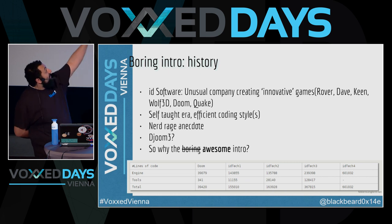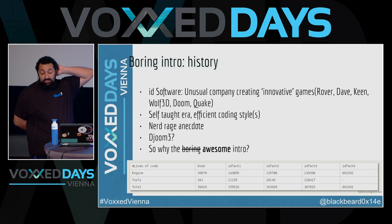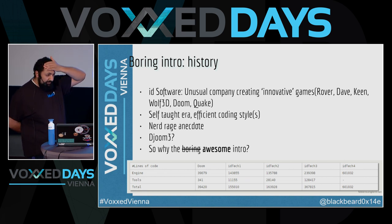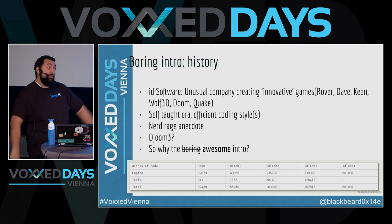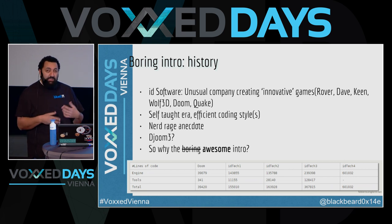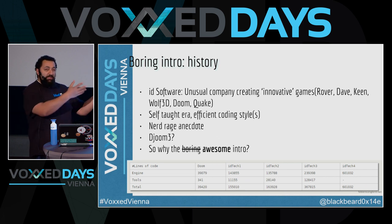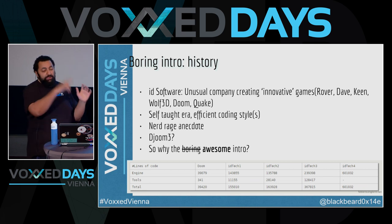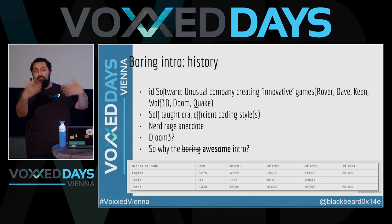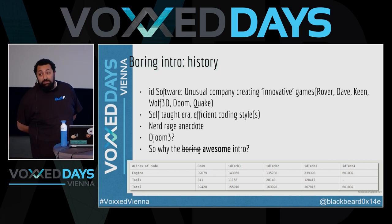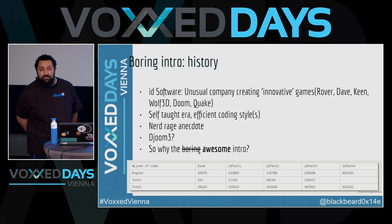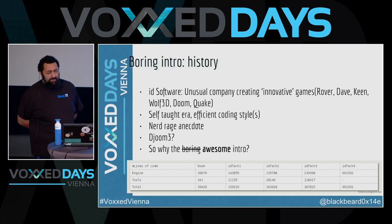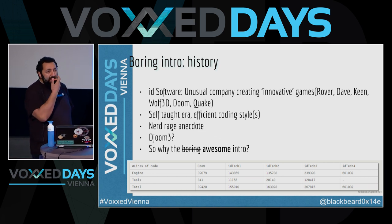To demonstrate that, I have a nerd rage anecdote. Back in the 90s, after they released the source code of Doom, people were looking through and code-reviewing it. Somebody noticed the way asset loading worked: you have a large file, and if you want the picture of the Doom guy, you just iterate through the whole file until you find it. Same for the shotgun sound — just iterate through the file.